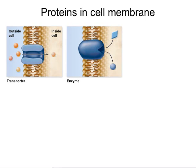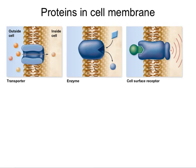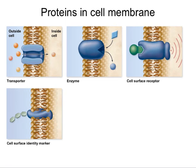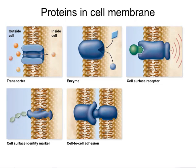There are also proteins that act as enzymes, catalyzing reactions at the perimeter of the plasma membrane. There are other proteins that act as receptors, recognizing and binding to signaling molecules circulating outside of the cell. There are also proteins that convey the identity of the cell, which is very important for immune function and during the process of development and cellular differentiation.